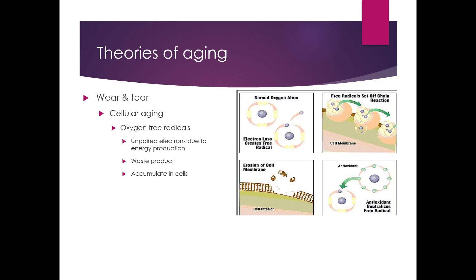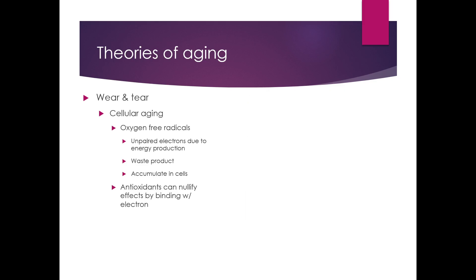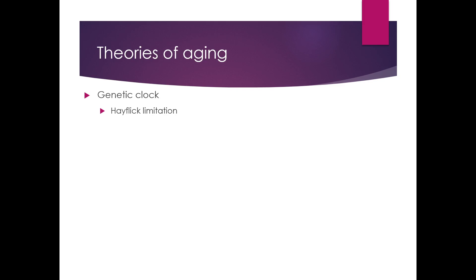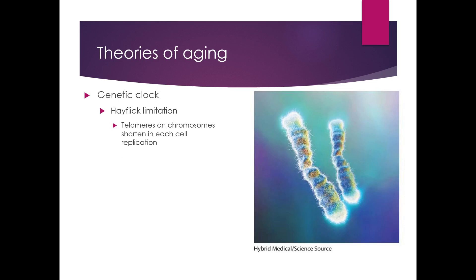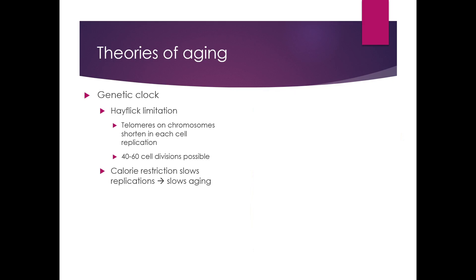Antioxidants can capture those free radicals and basically neutralize them. If we follow the genetic clock theory, the Hayflick limitation explains why you can only replicate your cells about 60 times over your lifespan. The telomeres — which are the tips of the chromosomes — get shorter and shorter every time the cell replicates. So you have less genetic material on each chromosome each time. Somewhere between 40 and 60 cell divisions would be possible before the chromosome would be so short that it doesn't carry enough genetic material to actually give its message.